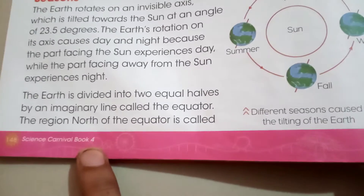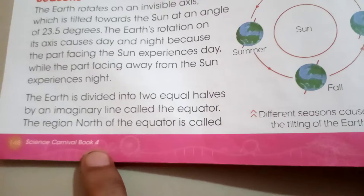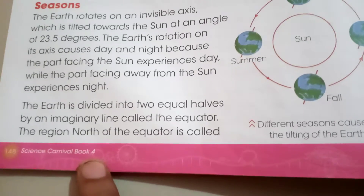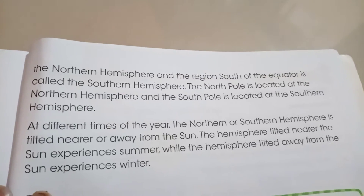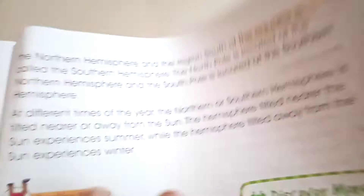Earth is divided into two equal halves with the help of an imaginary line called the equator. The north region of the equator is called the northern hemisphere, while the south region is called the southern hemisphere. The north pole is located at the northern hemisphere, while the south pole is located at the southern hemisphere.